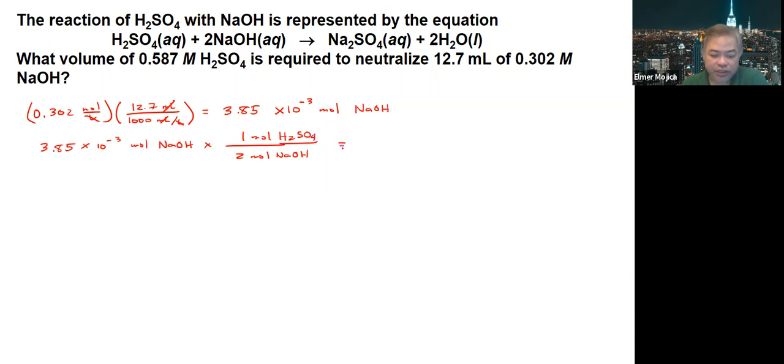If we're going to get half of this value, you will get around 1.92 times 10 to the negative 3 moles of sulfuric acid.